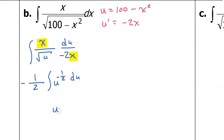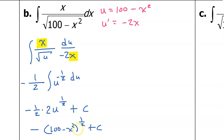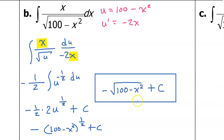I need to increase this exponent by 1, so adding 2 over 2 makes this a positive one-half power. Then I divide by my new exponent — dividing by one-half is the same as multiplying by 2. Don't forget that we still have the negative one-half out in front, and don't forget the constant of integration. These 2's will cancel each other out, so we end up with negative u to the one-half power plus c. Since u is 100 minus x squared, we can put the square root back in. So this would be the final answer.